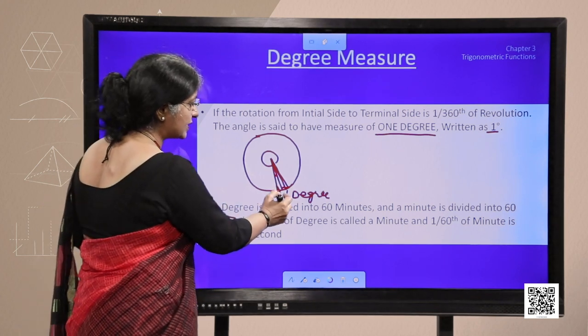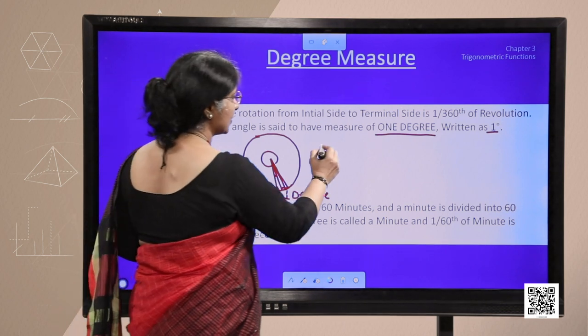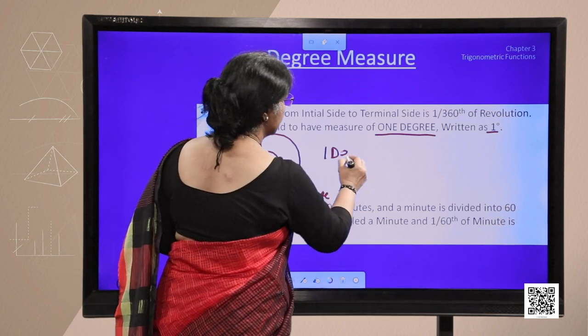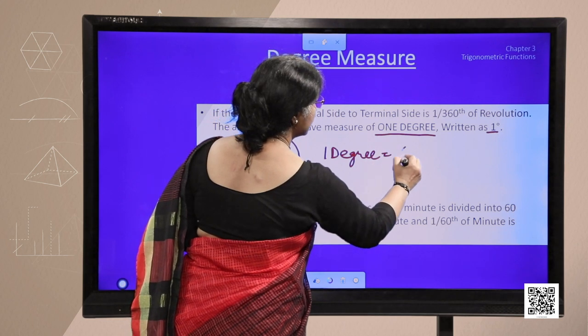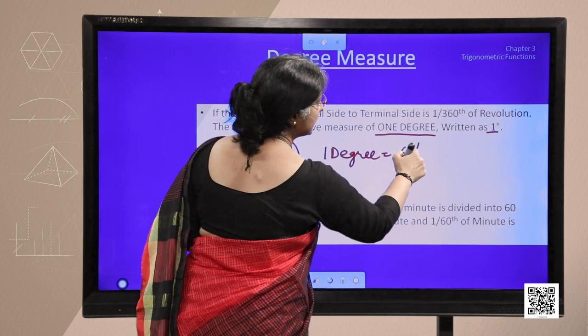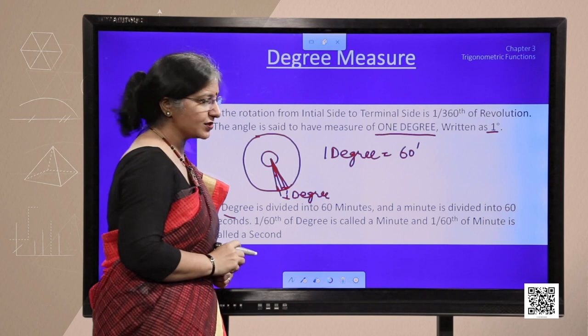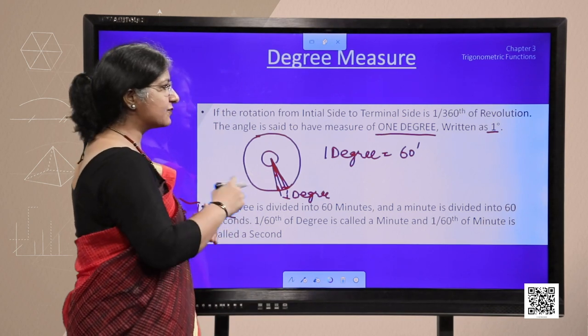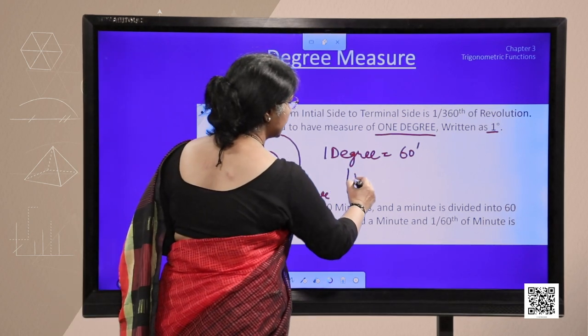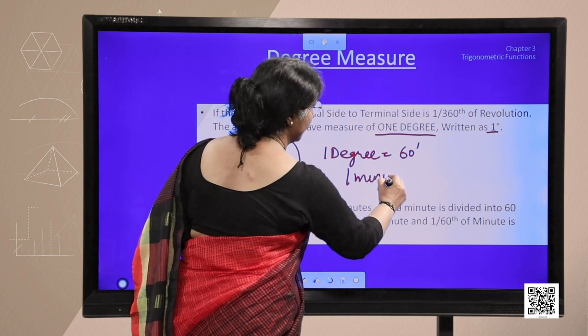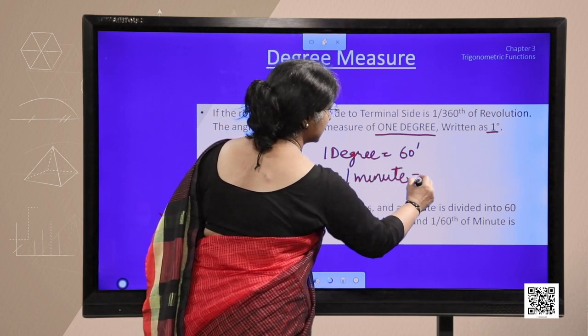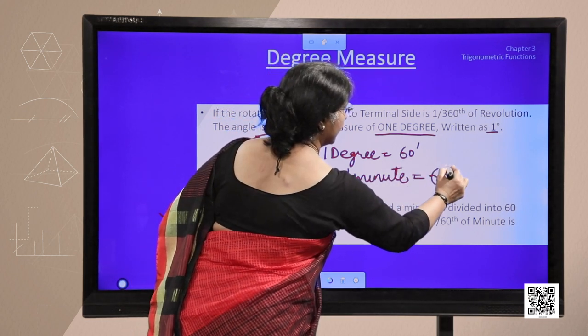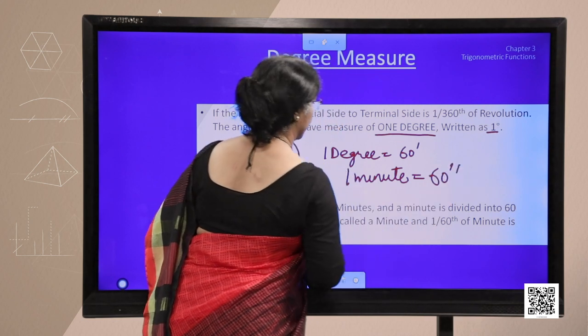Now this 1 degree is further divided into 60 minutes, 1 degree is equal to 60 minutes. Minute sign is shown by this small dash and this 1 minute is further divided into 60 seconds. And for seconds we put 2 dashes here.